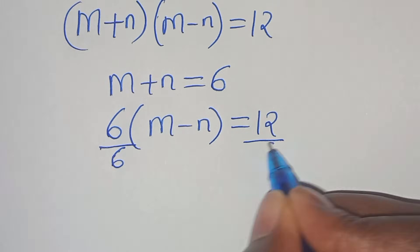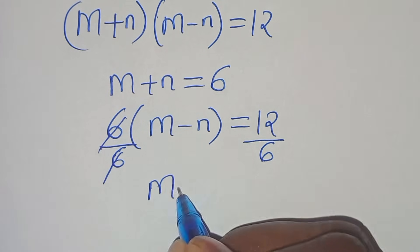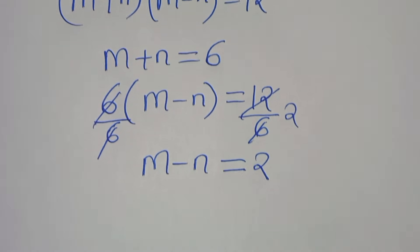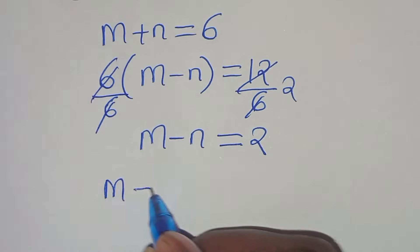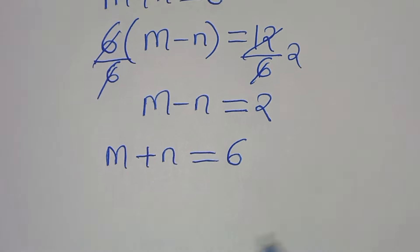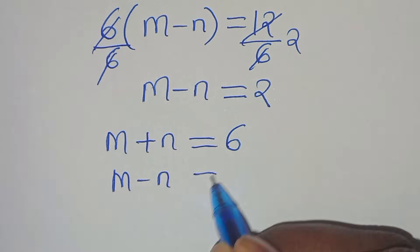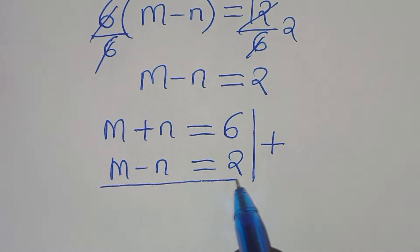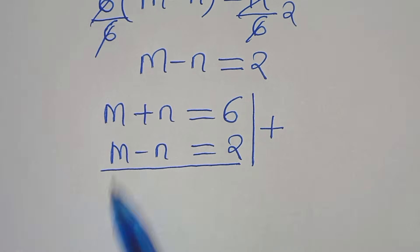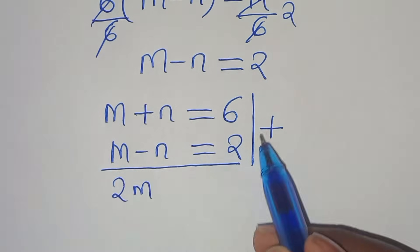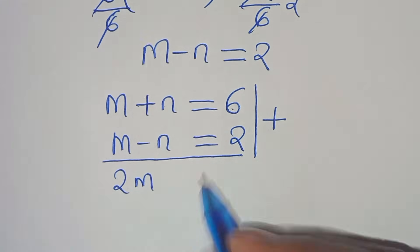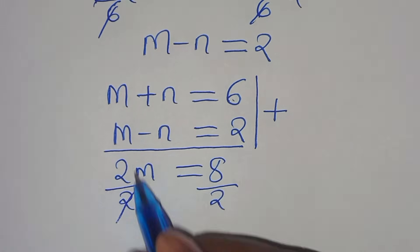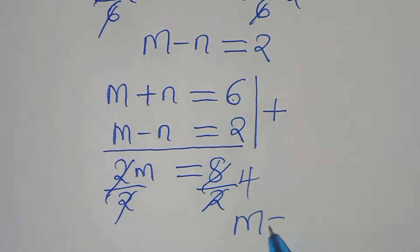Dividing both sides by 6, we get m minus n equals 2. Now we have the system: m plus n equals 6, and m minus n equals 2. Adding these two equations: 2m equals 8, so m equals 4.